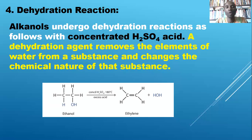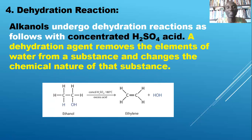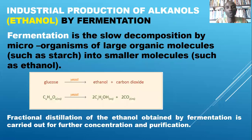Fourth is dehydration. When water is removed from an alkanol molecule — for example, ethanol — in the presence of a catalyst such as concentrated H2SO4, an alkene is formed. Using ethanol as an example, ethene is formed and water is removed. These are the four types of chemical properties of alkanols: combustion, esterification, oxidation, and dehydration.